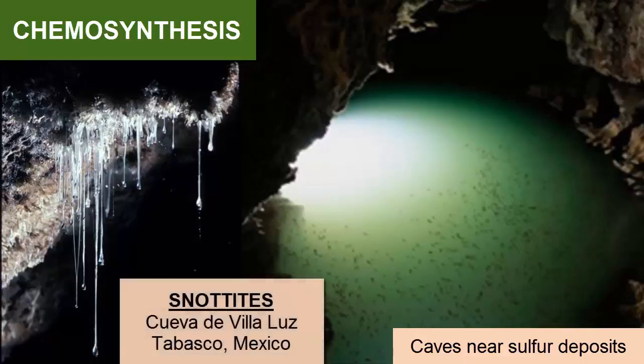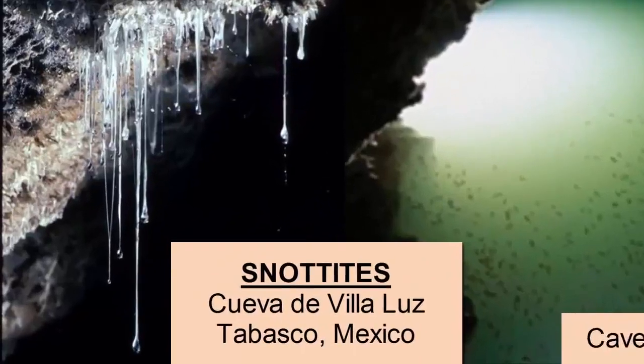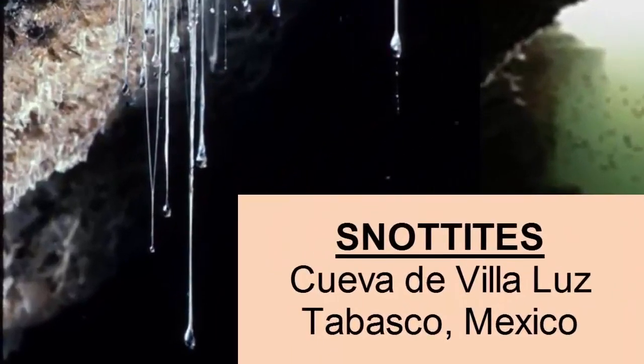These mats are called snotites. This example is from Cueva de Villaluz in Tabasco, Mexico. These snotites have acid drops at their tips with a pH of zero.